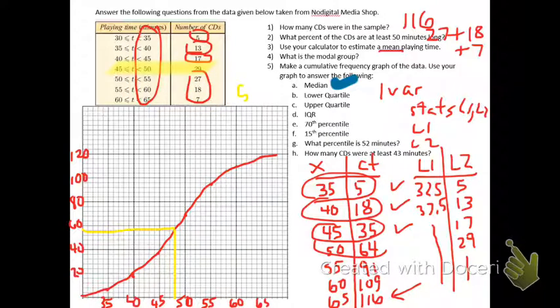My lower quartile, if 58 is my median, half of that is 29, so it's the median of the bottom half.